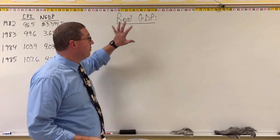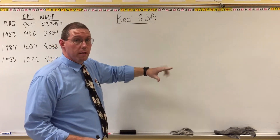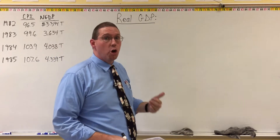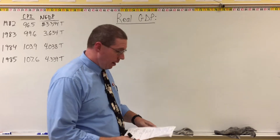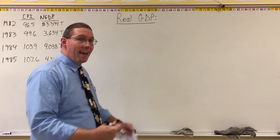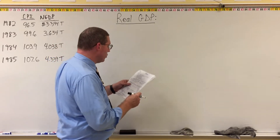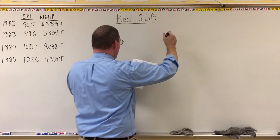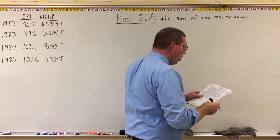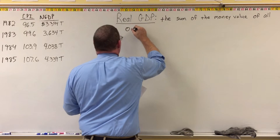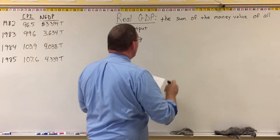What I want to do in this lesson is define real GDP and give you a formula so that you are capable of calculating real GDP given CPI data and nominal GDP data. With real GDP, we want to take out the effects of increases in prices. Real GDP is the sum of the money value of all output without the effects of inflation or deflation.